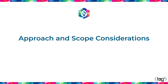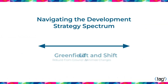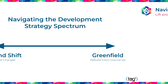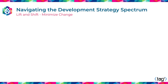So I want to talk about two approach and scope considerations that are going to have a big factor. The first up is your strategy. On one end of the spectrum, you have the concept of a lift and shift, where you try and keep as much as possible the same. And on the other end of the strategy, you have greenfield development, where you build from the ground up.